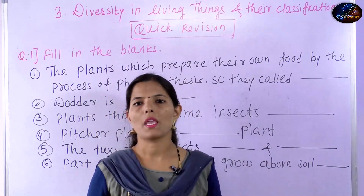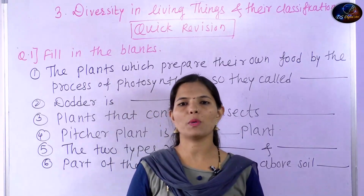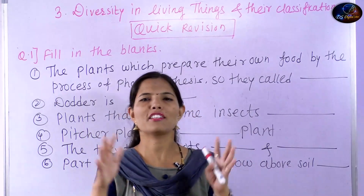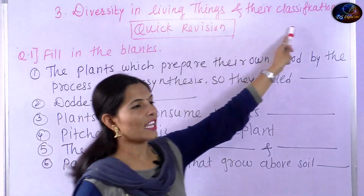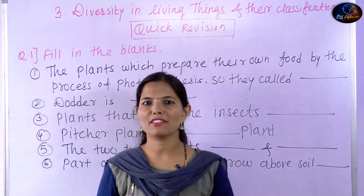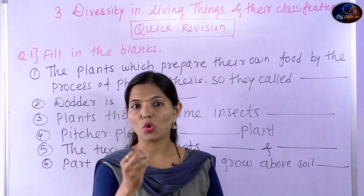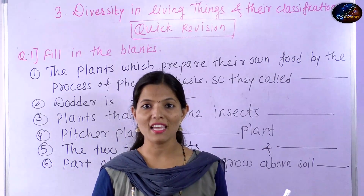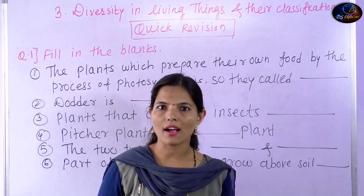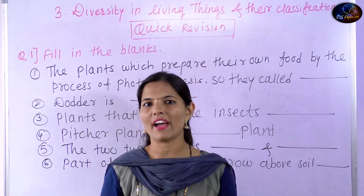Diversity means variety for all the living things — their work, their values. A big variety in the group, and scientists have done classification of living things. Classification means grouping similar things together. So these are all the classifications in this lesson. Let's quickly revise lesson three.